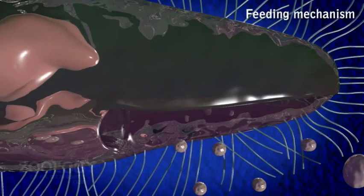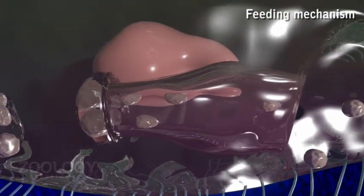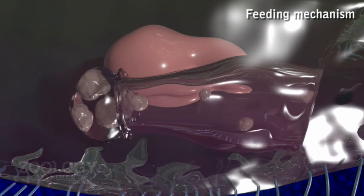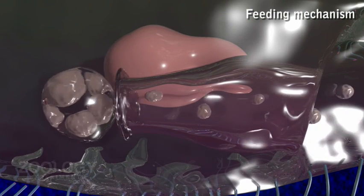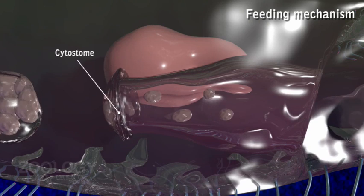Feeding Mechanism. Paramecium swims to places where it can get its food. Its food-catching apparatus is much more specialized. Food is ingested by a definite cell mouth or cytostome, lying at the bottom of the buccal cavity.